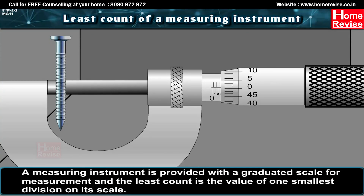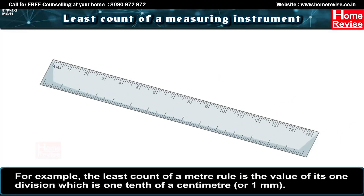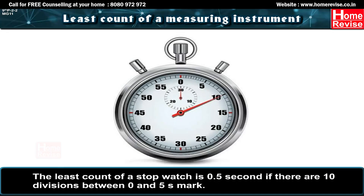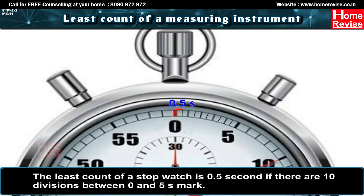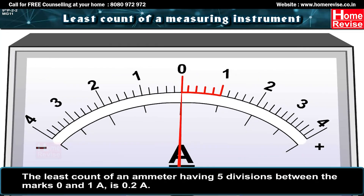A measuring instrument is provided with a graduated scale, and the least count is the value of one smallest division on its scale. For example, the least count of a meter rule is one millimeter. The least count of a stopwatch is 0.5 second if there are ten divisions between 0 and 5 second mark. The least count of an ammeter having five divisions between 0 and 1 ampere is 0.2 ampere.